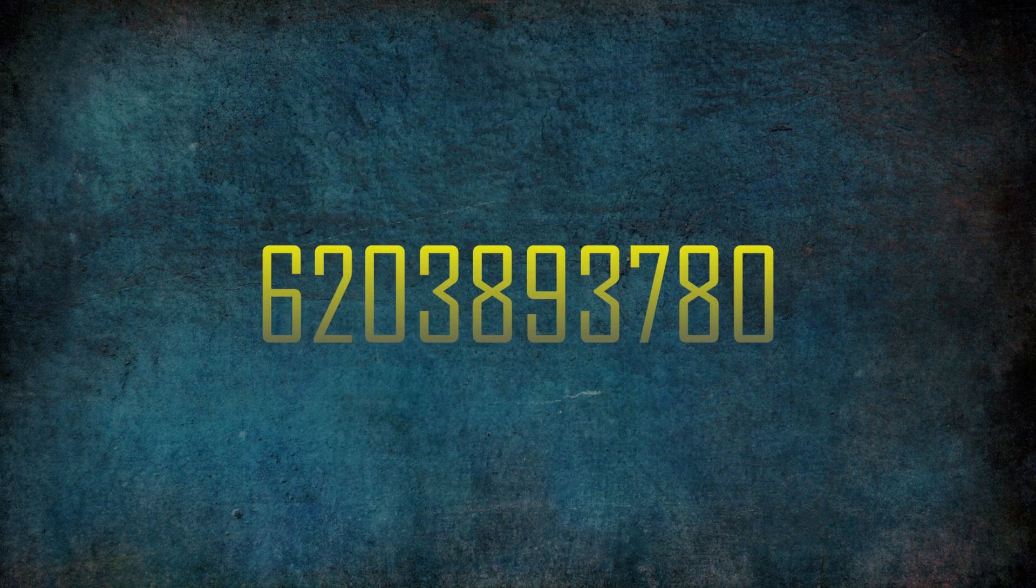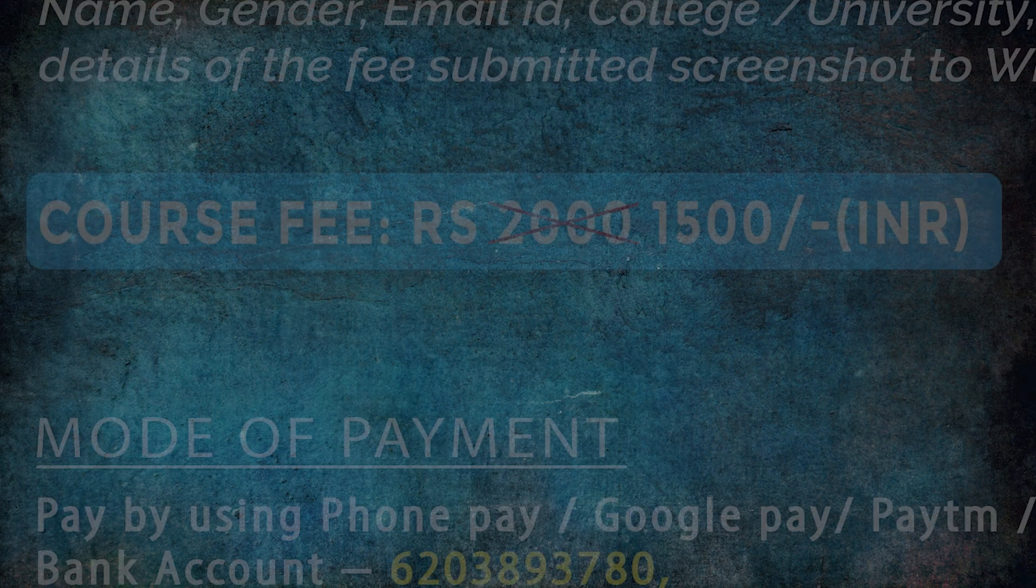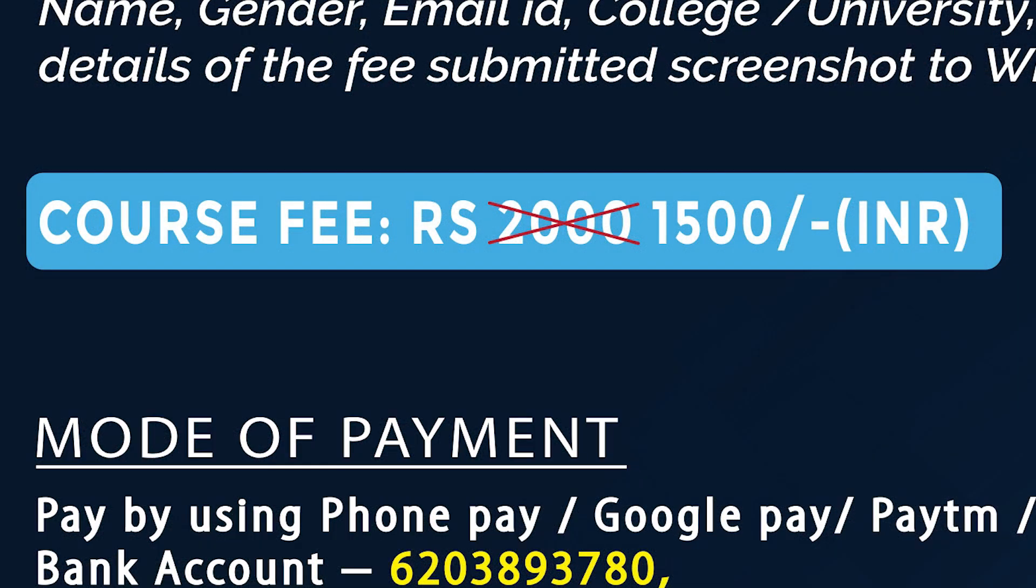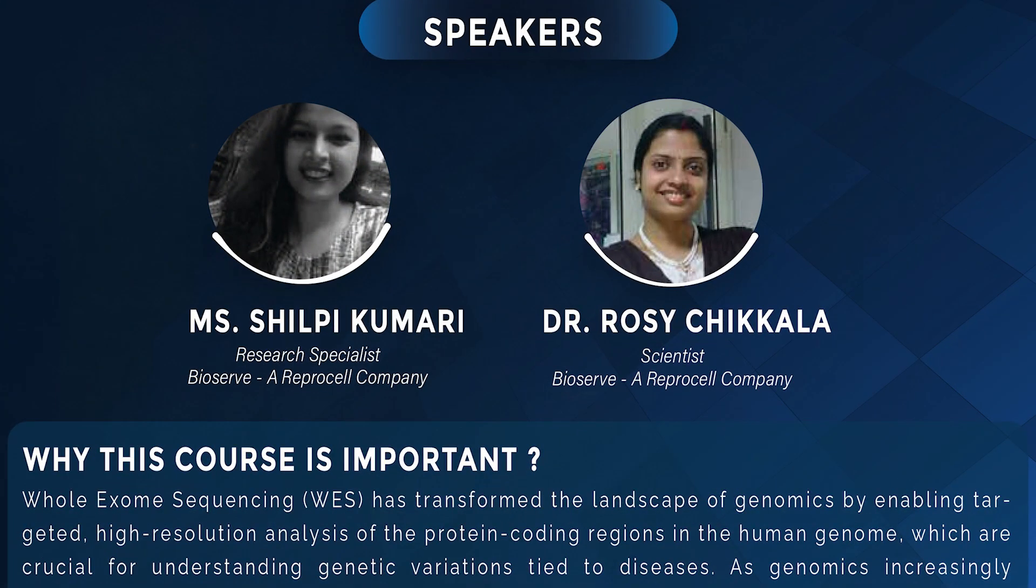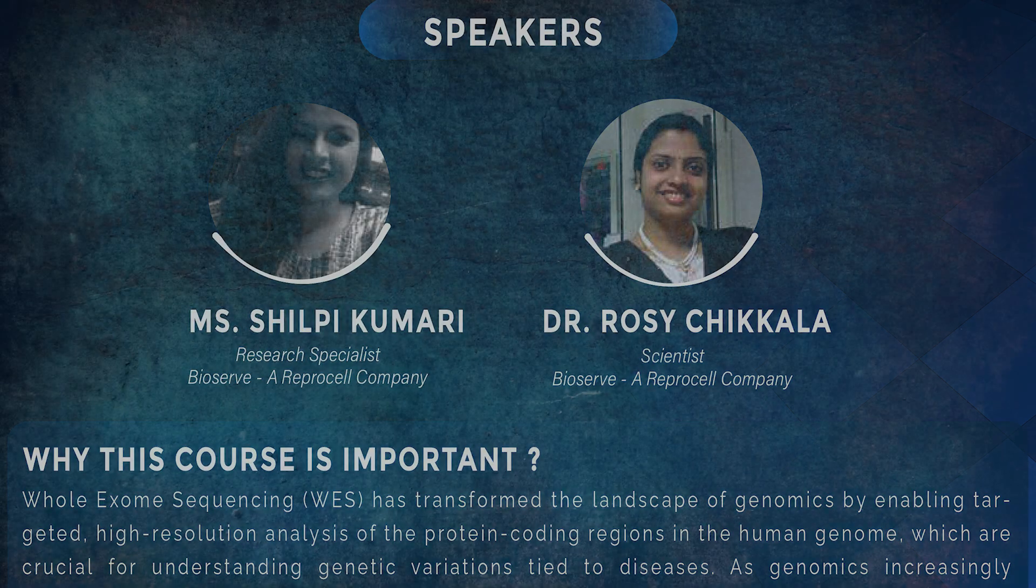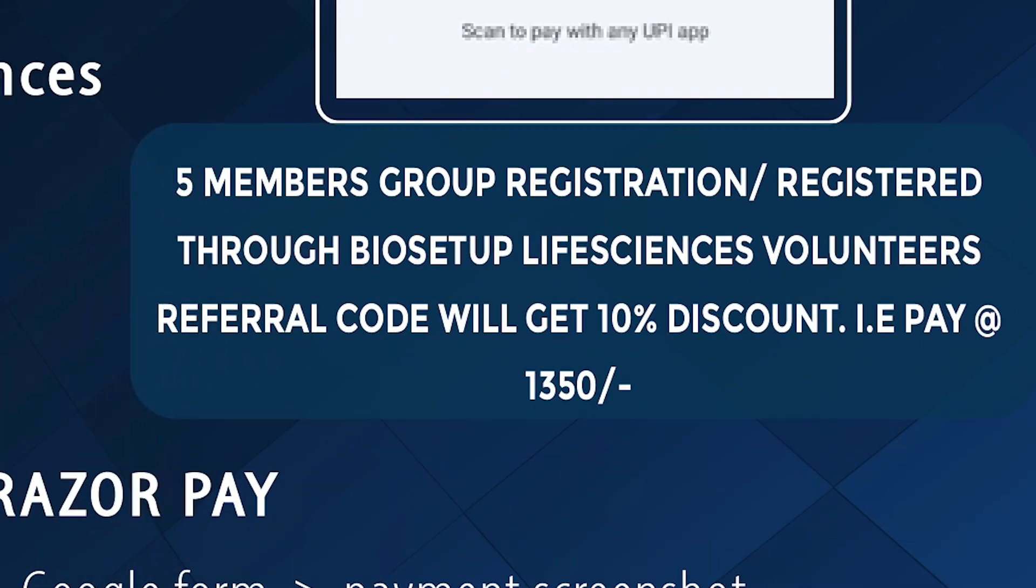The fees to join this course is quite minimal, rupees 2000, but currently we are giving you 500 rupees off, so now the amount is 1500 rupees only. There are more exciting offers. If you are registering this course along with your 4 friends, that is a 5-member group, or registering through Biosphere of LifeScience Voluntary and Refresh Co, then you will get additional 10% discount, so you will need to pay only rupees 1350.